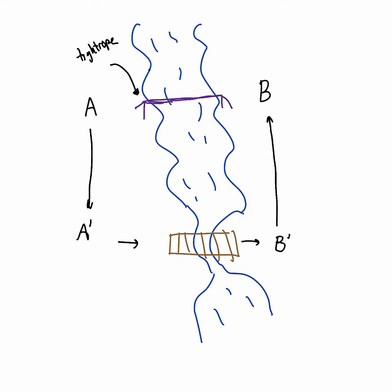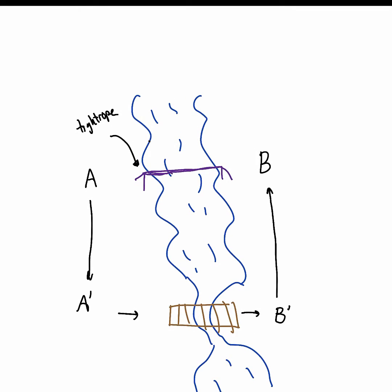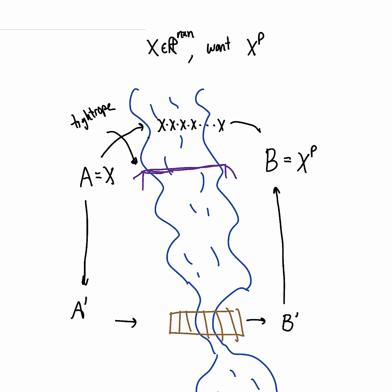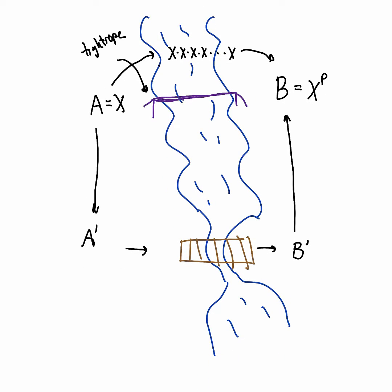This is exactly what we're trying to do when we're doing the eigenvalue decomposition. Imagine I have a matrix X in R^(n×n), and to take a very simple example, say I want X to the p power — so A is equal to X and B is equal to X^p. The obvious easy way to get from point A to point B is simply by taking X times X times X all the way to p, so that's the tightrope way. But those of you familiar with eigenvalues and eigenvectors will know there is a much better way.